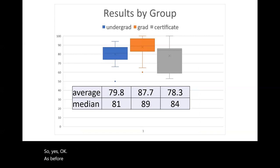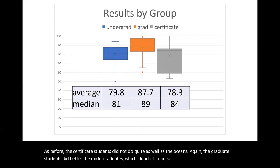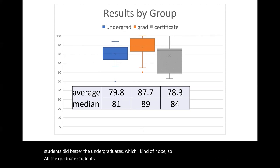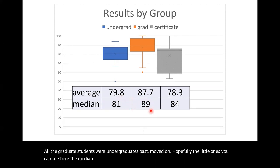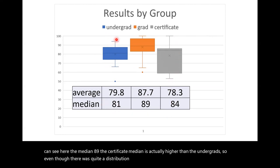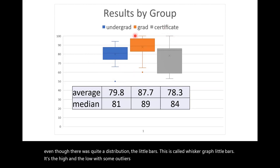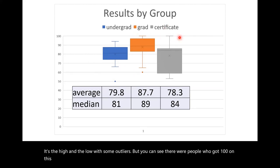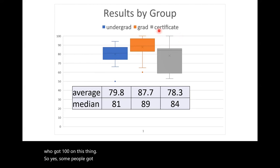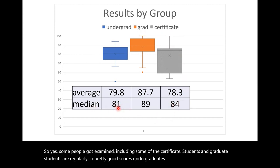Certificate students did not do quite as well as the others. Graduate students did better than undergraduates. The graduate student median was 89. The certificate median is actually higher than undergrads. There were people who got 100 — some certificate students, some graduate students, everybody got a hundred — pretty good scores. The undergraduate median falls in the B range.